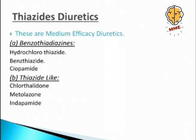Thiazide diuretics are medium-efficacy diuretics. They come in two types: benzothiadiazines — hydrochlorothiazide, benzothiazide — or thiazide-like drugs — chlorthalidone, metolazone, indapamide. The key names to remember are hydrochlorothiazide, chlorthalidone, metolazone, and indapamide.